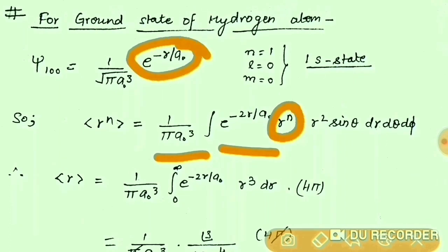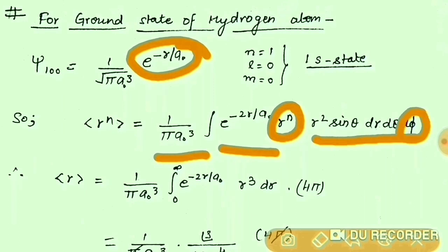The volume element dτ is in spherical coordinates, since the approximation for the hydrogen atom is that it is spherical. So dτ = r² sinθ dr dθ dφ. By using symmetry, the θ integral runs from 0 to π and the φ integral runs from 0 to 2π.